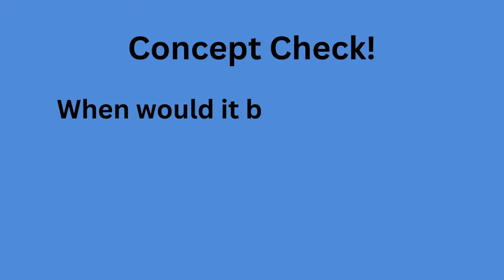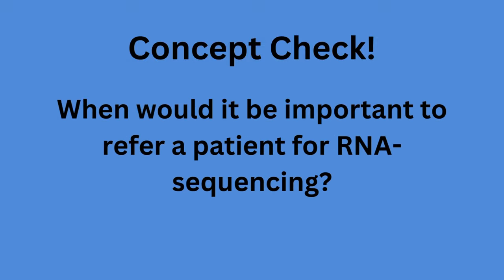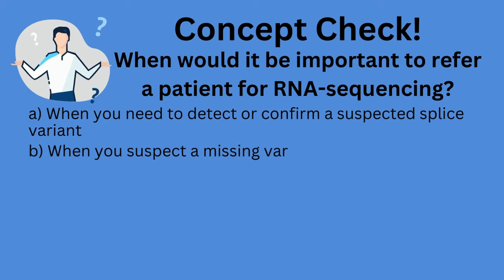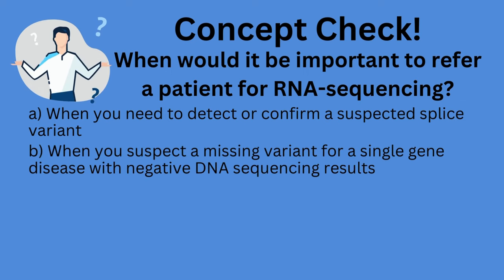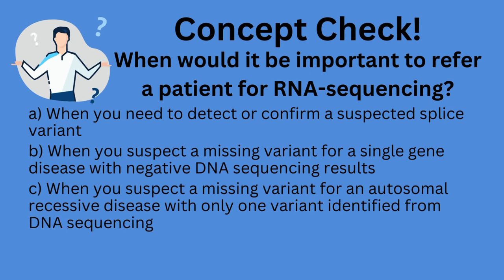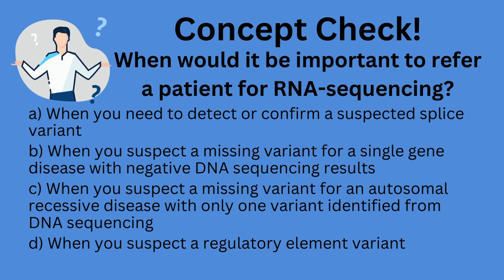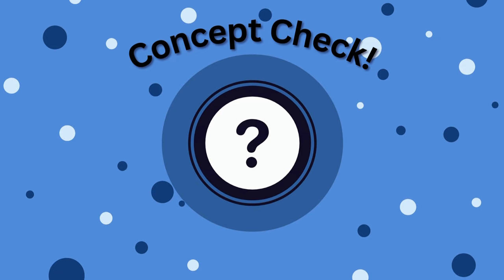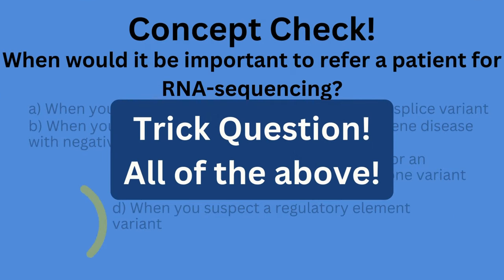Concept check: When would it be important to refer a patient for RNA sequencing? A. When you need to detect or confirm a suspected splice variant. B. When you suspect a missing variant for a single gene disease with negative DNA sequencing results. C. When you suspect a missing variant for an autosomal recessive disease with only one variant identified from DNA sequencing. D. When you suspect a regulatory element variant. Now take a moment to pause the video and answer this question. This is a trick question — all of these are appropriate times to refer a patient for RNA sequencing. Feel free to rewind the video and review this concept if you need to.